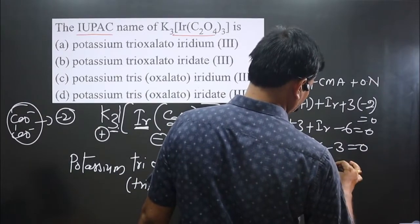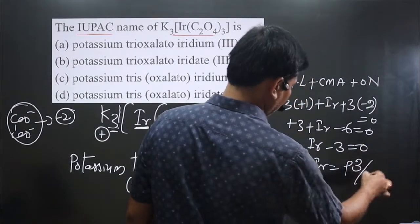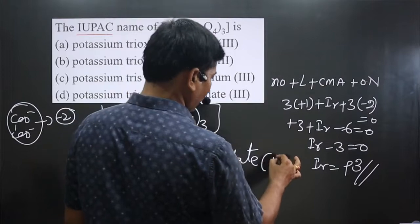Then iridium is present in +3 oxidation number. So we use the Roman numeral three. Now pay attention carefully.